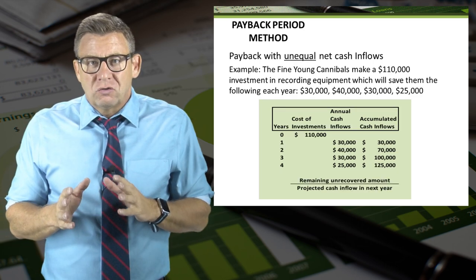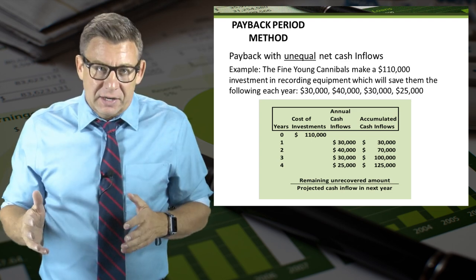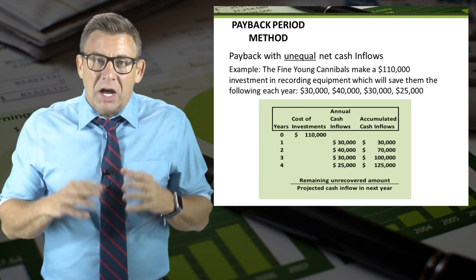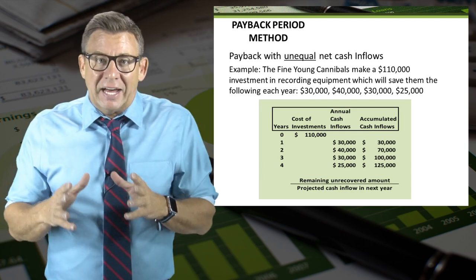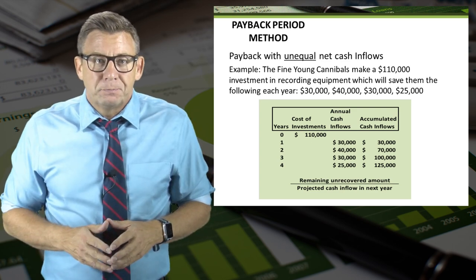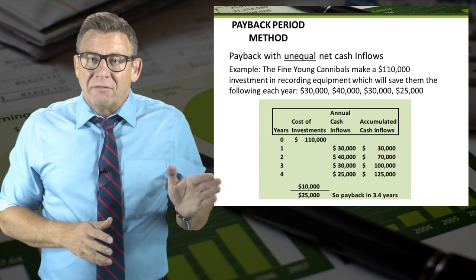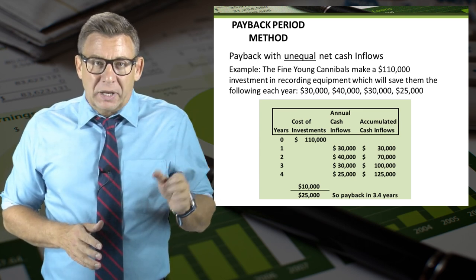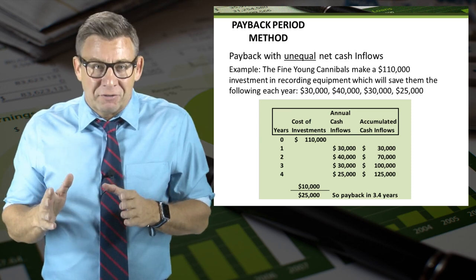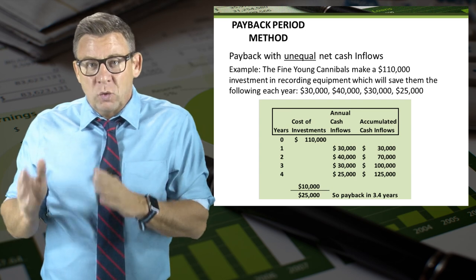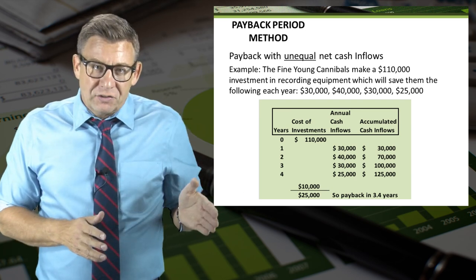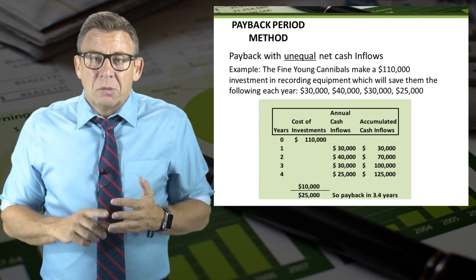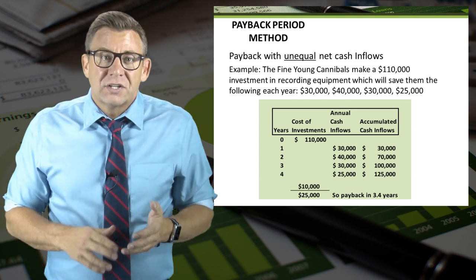Often the unequal cash flows will pay back during part of a year rather than at the end. When this happens, we need to use a formula for the partial year: the remaining unrecovered amount divided by the expected cash inflow in the next year. In this updated example, I have $10,000 still unrecovered after year three and expect to recover $25,000 in year four. So $10,000 divided by $25,000 is 0.4 — payback is three full years plus 0.4 of the next year, or 3.4 years.